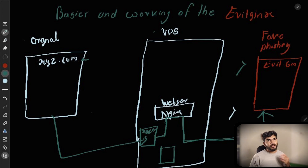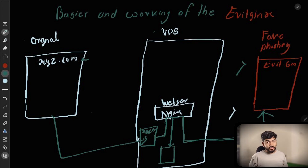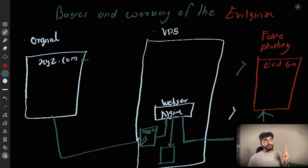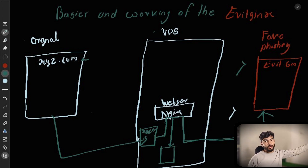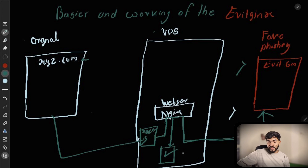There is one file called a phishlet — it's like a rule book where we mention what to do with the phishing website. In the phishlet you can say: create the phishing website of xyz.com, replace all instances of the name 'xyz' with 'evil.com', replace the xyz images on the original website with other images on the evil website. All these rules are written in the phishlet.